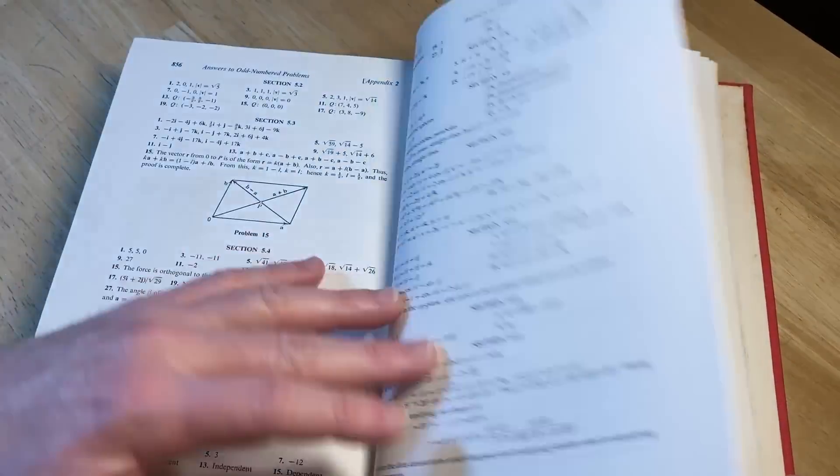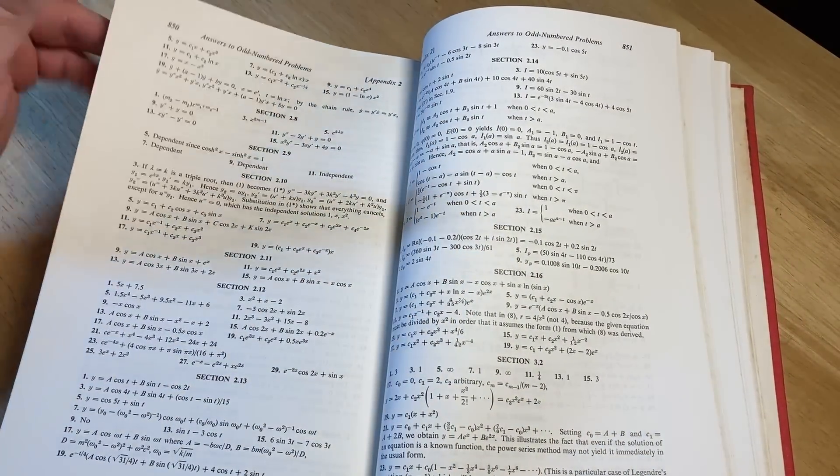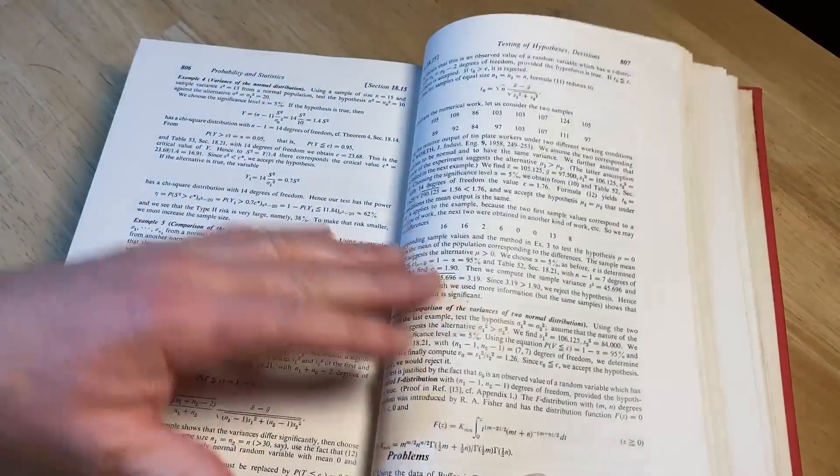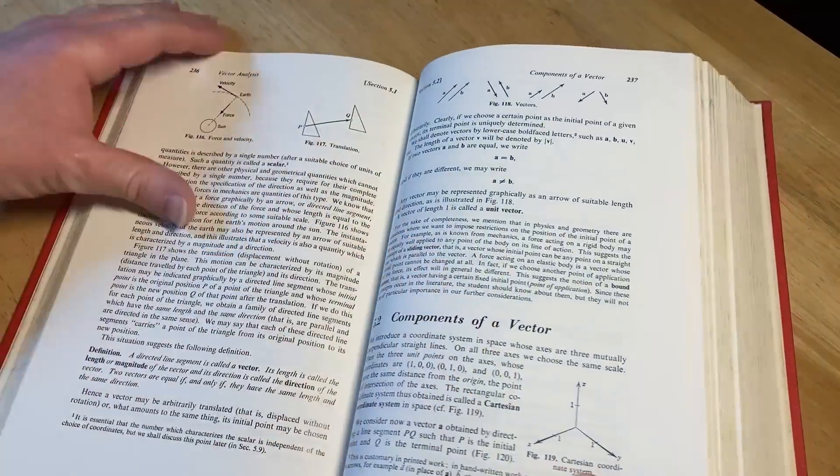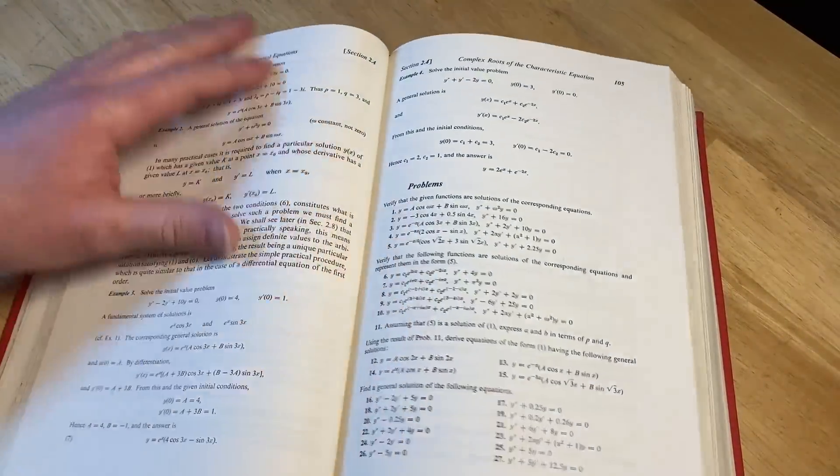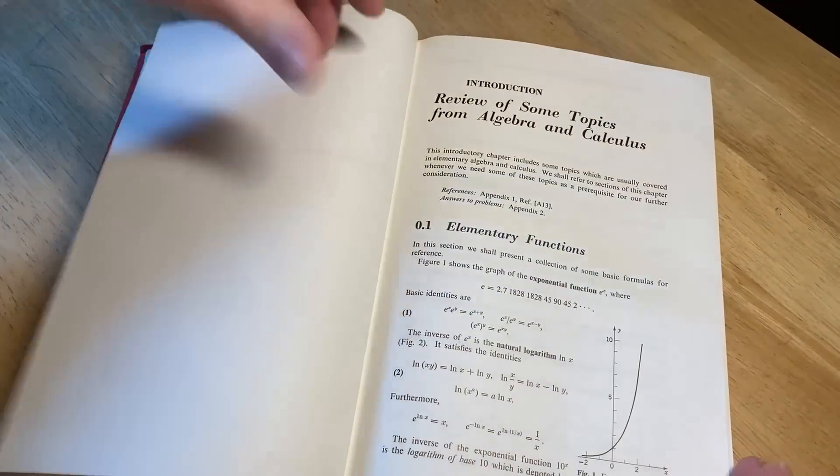But you can see how it does have some answers. Obviously it'd be wonderful if it had all of the answers. I've done several of the exercises from this book and checked my answers in the back. So yeah, it would have been helpful to have all the answers, but again, it's just something that a lot of books don't have. And for what you get with this book, I'm very, very happy with it. Let's take a look at the beginning.